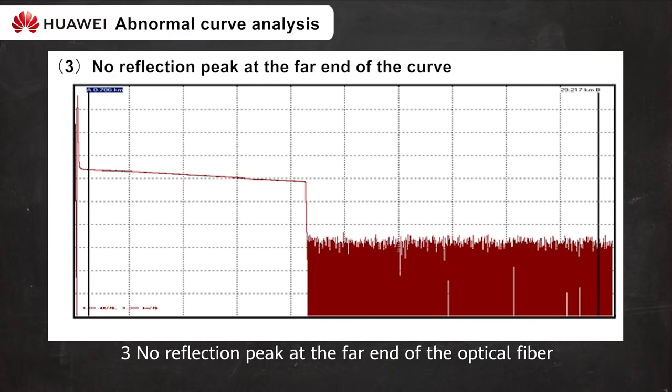3. No reflection peak at the far end of the optical fiber. The possible cause is that the fiber may be broken or the end is not clean or it is damaged.